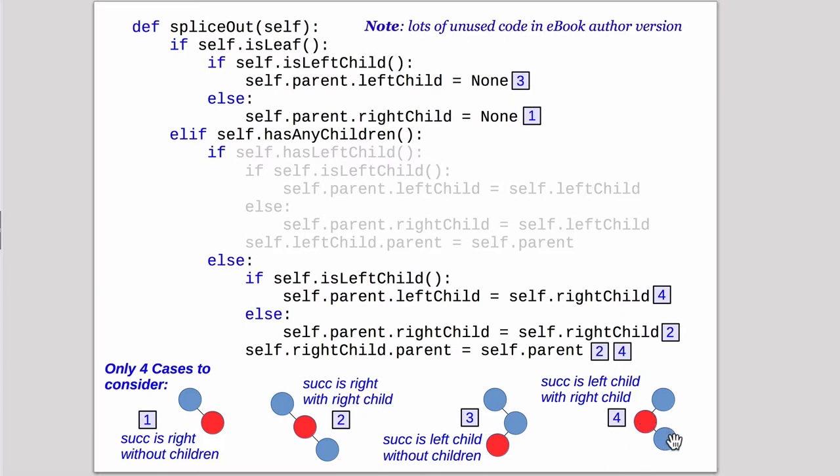But it does have a parent so we have to link this child to point up to the parent. And we have to link the parent's left pointer to point to this child. So this is number four that's taken care of this line and this line.